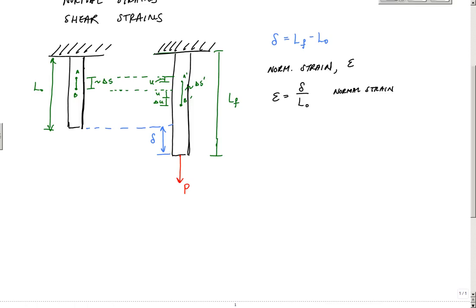And I would say, well, the strain, the normal strain of this region, this line segment is going to be, just like before, the change in length, which will be delta S prime minus delta S over the original length delta S, which in terms of these delta U's, if you look at it, it's really just this delta U divided by delta S. And this would be my average normal strain for segment AB.